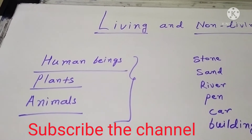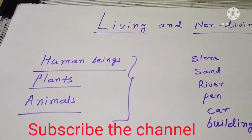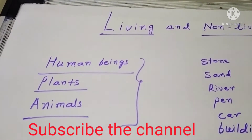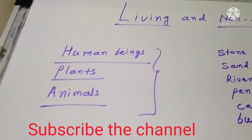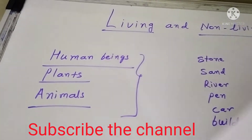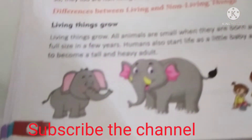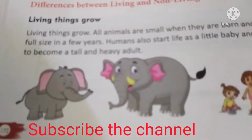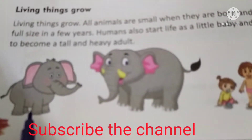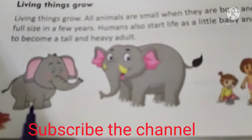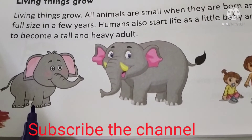Living things are living and they grow. See here — living things have a life. This is the young one of the elephant, and this is the adult elephant.